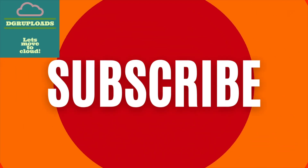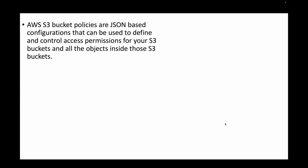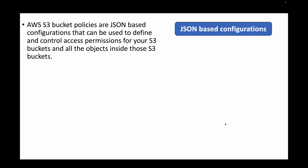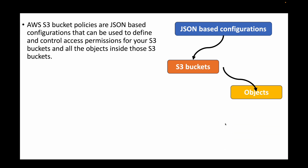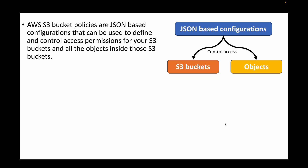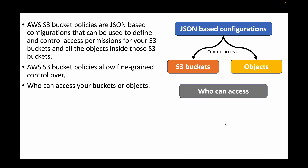Out of those mechanisms, one option is bucket policies. In this session we will be looking at bucket policies, and in the next session we will talk about ACLs, which is another mechanism to control access to your data in S3. S3 bucket policies are simply JSON-based configurations that we can create to control access permissions both at the bucket level and the object level.